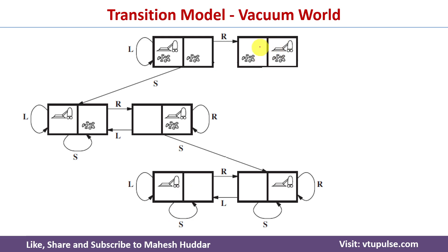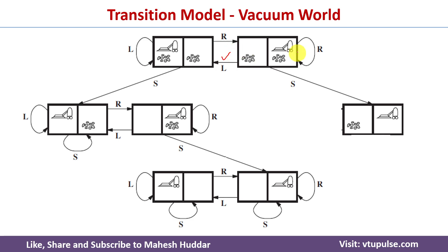From this new state, again we can apply three different actions. When we apply Right, the AI agent moves from left to right. When we apply Left, it remains the same state. When we apply Suck, it also remains the same state because the left location is already clean. Now we consider another state where the agent is in location B with B dirty. Applying Left moves the agent from location B to location A.